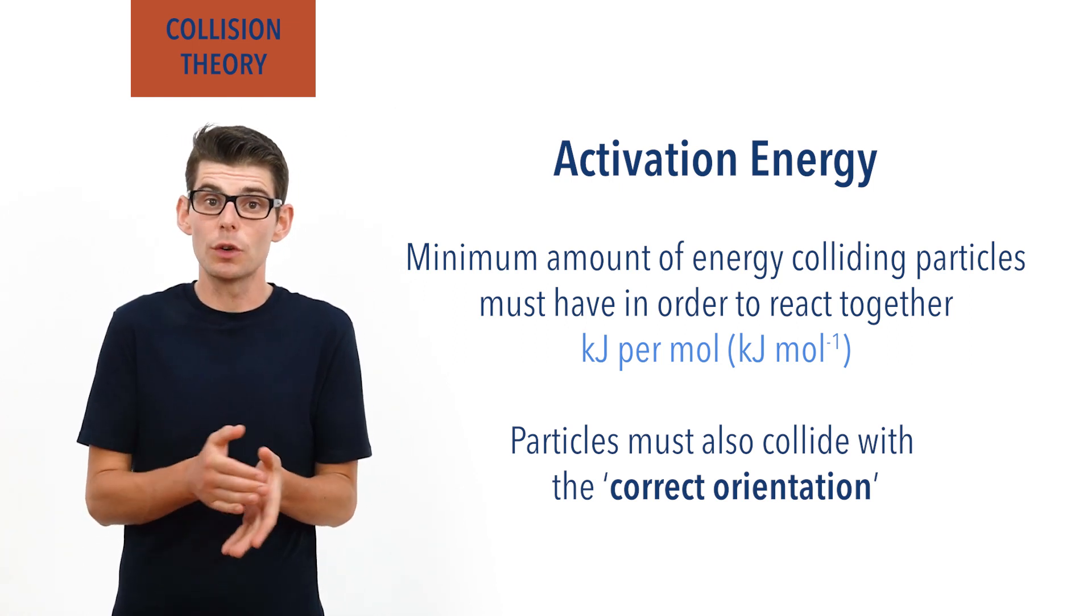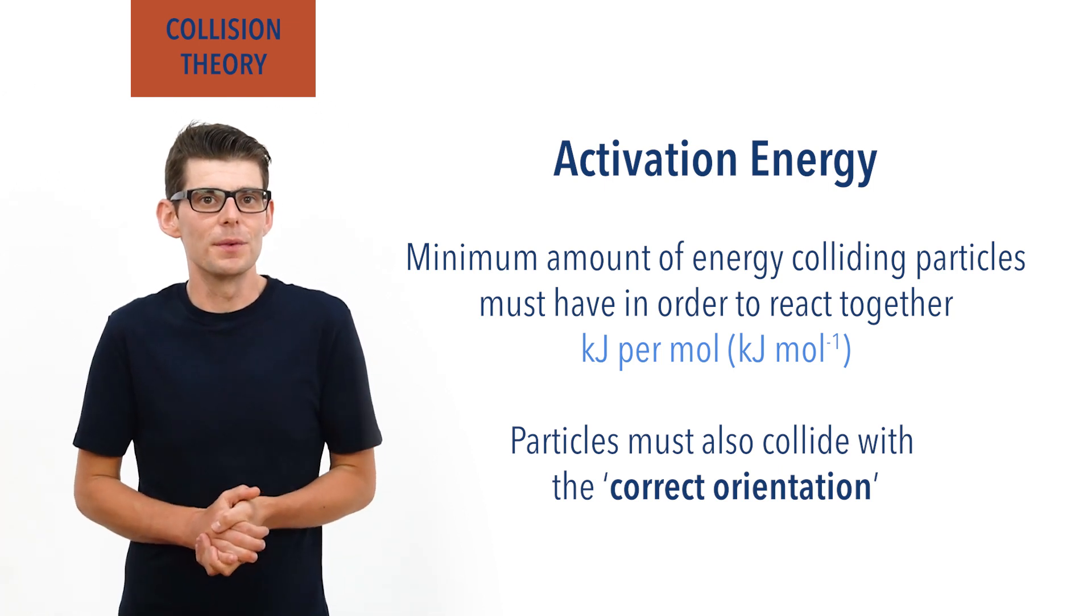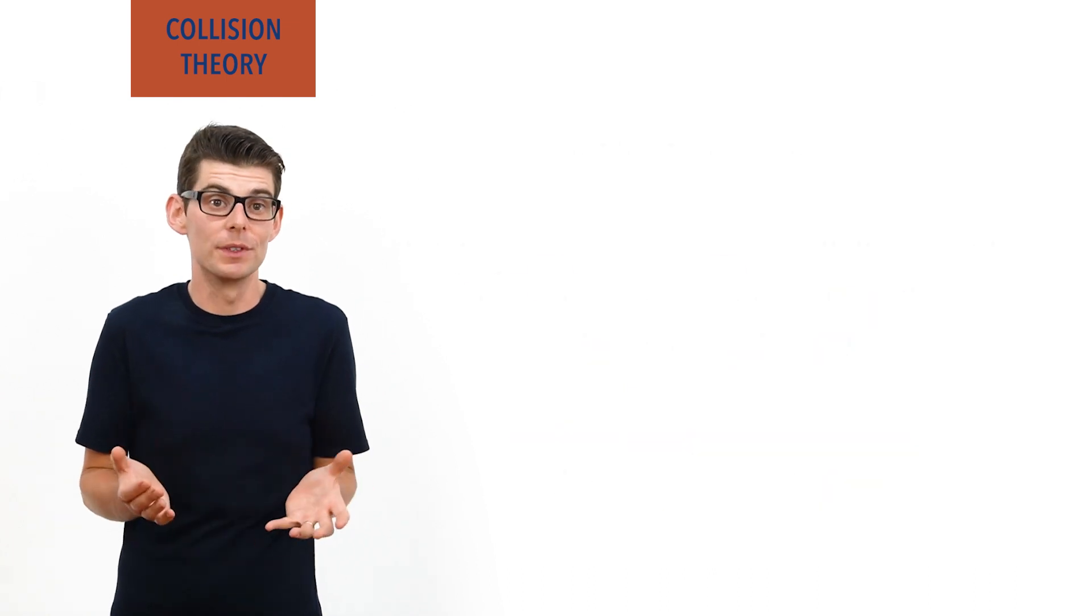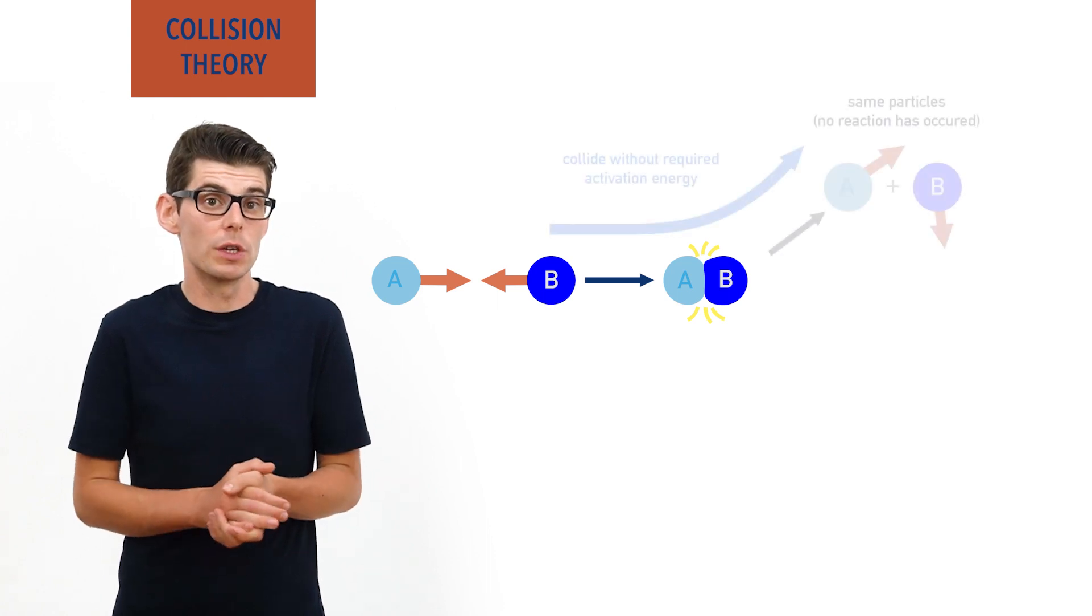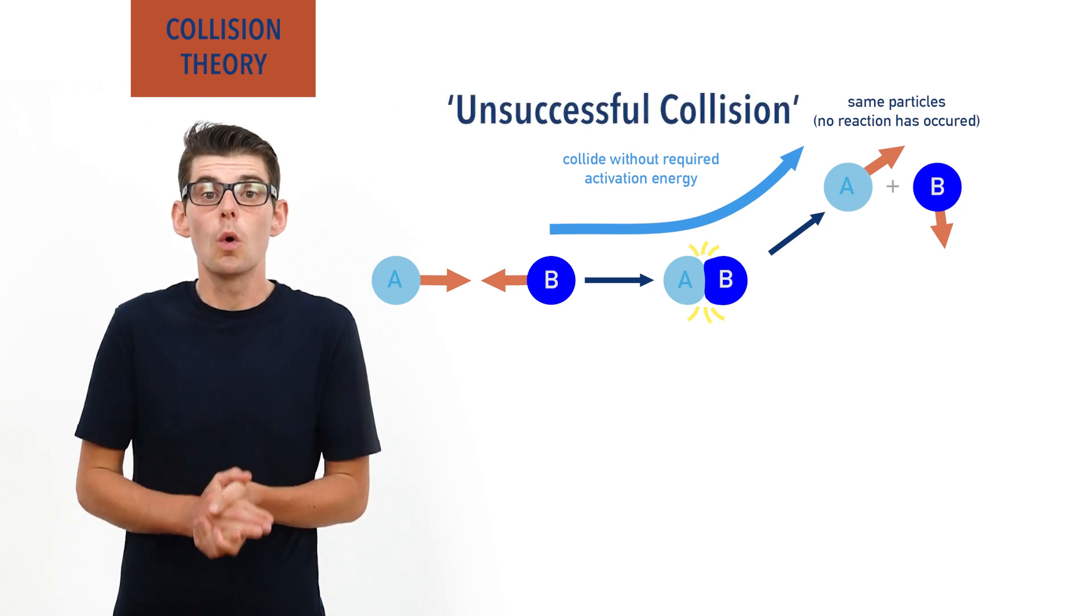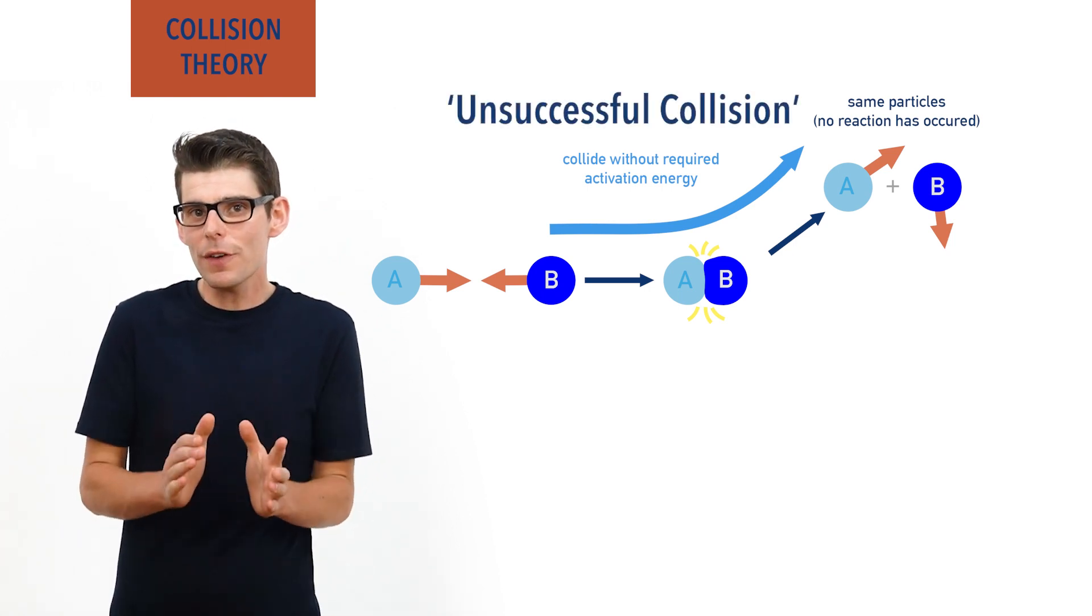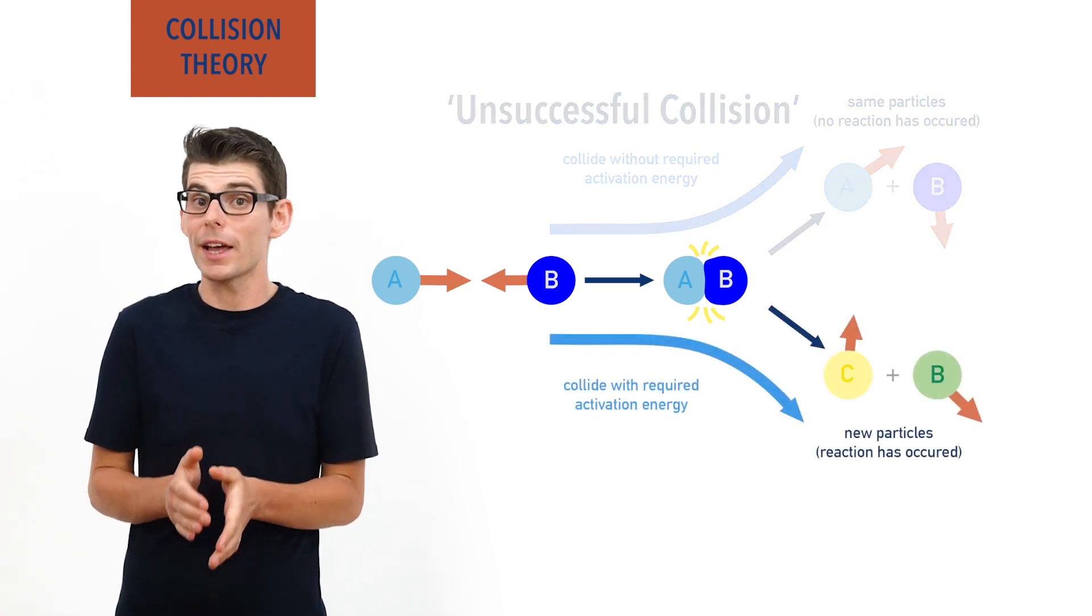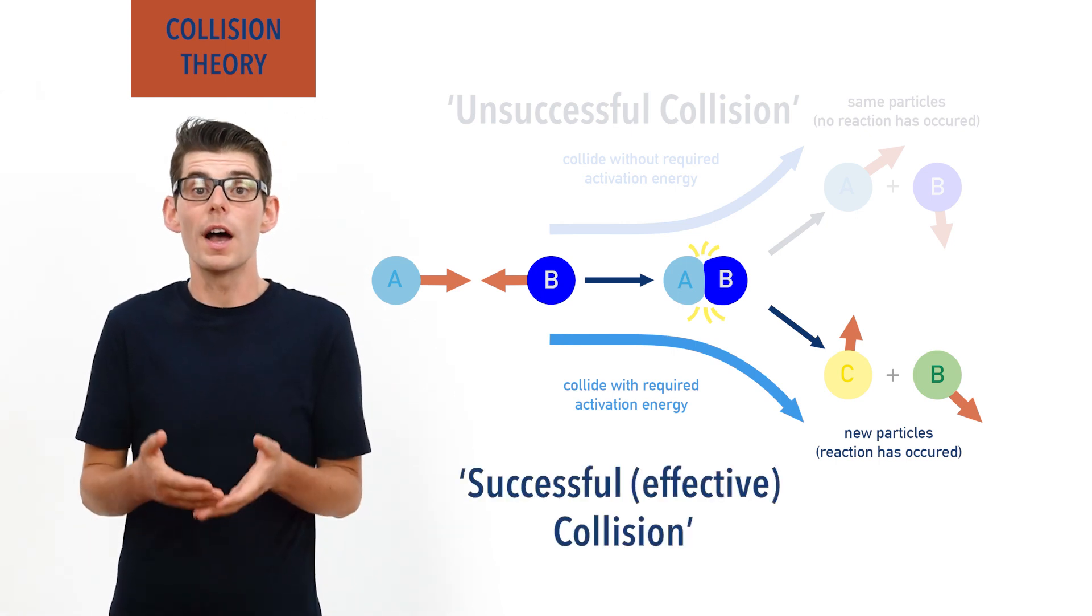This is covered in a separate video and on chemistrystudent.com—check the links in the description below. Most of the time when particles collide, nothing happens as they simply don't collide with enough energy to reach the activation energy required. These collisions are referred to as unsuccessful or unaffected collisions. If, however, two particles do collide with the required activation energy and a reaction does occur, the collision is described as being successful or effective.